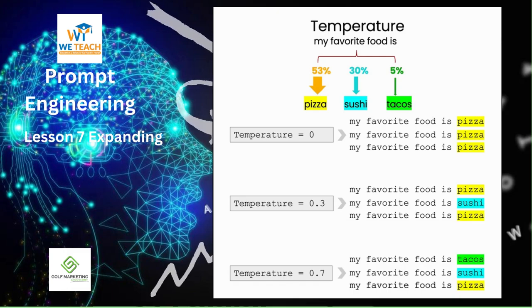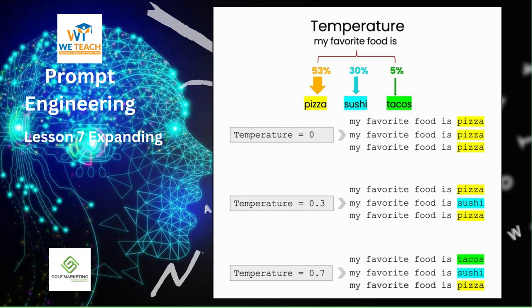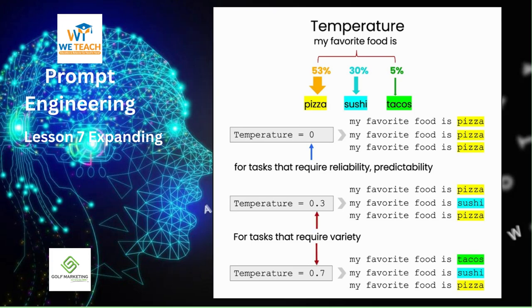As the model continues generating a response — say, 'my favorite food is pizza' versus 'my favorite food is tacos' — these responses will diverge more and more as additional words are generated. In general, when building applications where you want a predictable response, I would recommend using temperature zero. Throughout all of these videos, we've been using temperature zero. If you're trying to build a system that is reliable and predictable, go with this. If you're trying to use the model in a more creative way, where you might want a wider variety of different outputs, you might want to use a higher temperature.